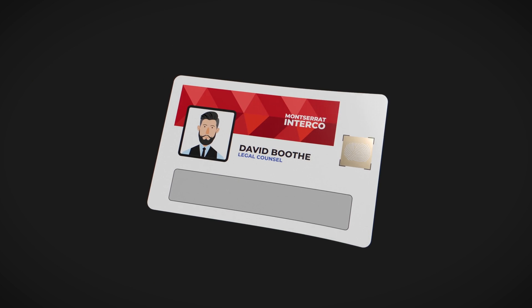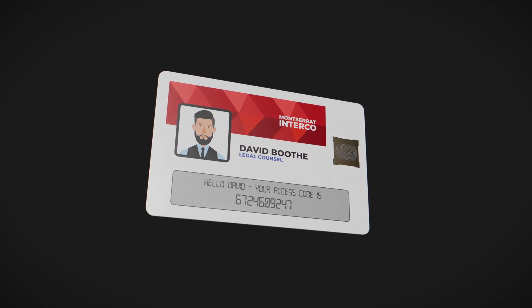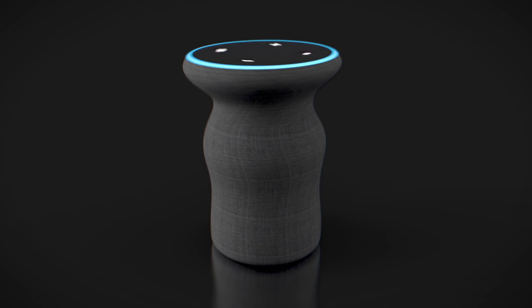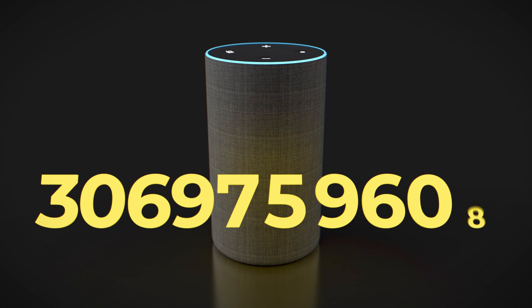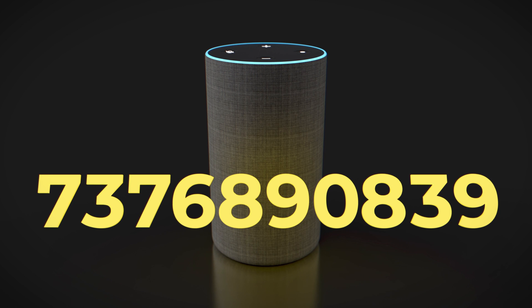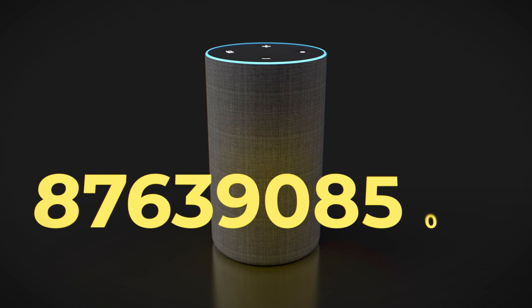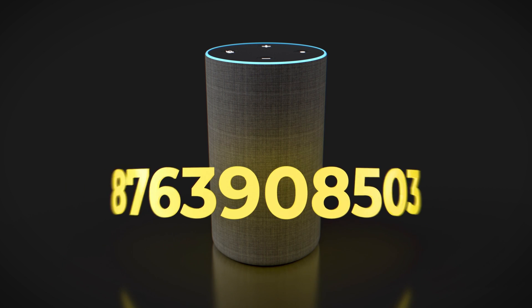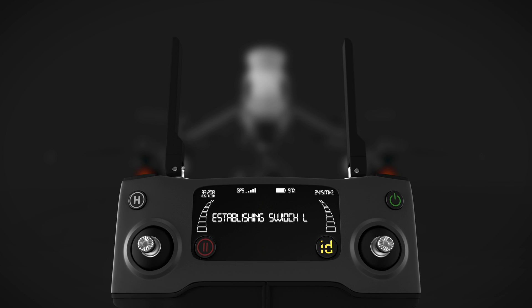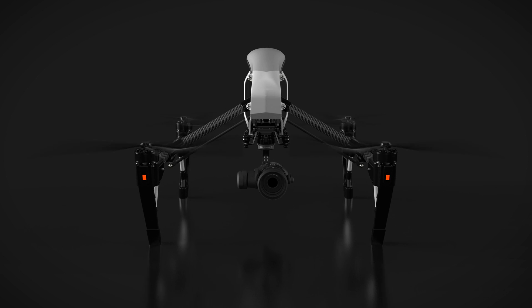The same secure technology behind Switch has applications in government IDs, the Internet of Things, connected speakers and more. Buying something with your smart speaker? Secure it with a Switch code and only you can make a purchase. Working with remotely controlled machines in sensitive locations, Switch authentication can bond only your controller to your drones, preventing would-be hijackers from seizing control.